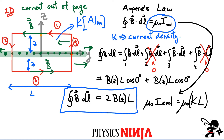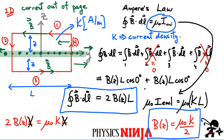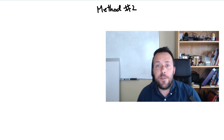Setting the two sides equal: 2BL = μ₀KL. The length L cancels from both sides — so the result doesn't depend on the loop size chosen. Isolating B, the magnitude of the magnetic field is B = μ₀K/2, a constant value that doesn't depend on the distance z from the sheet. We already know the direction from our earlier argument — it can be confirmed with the right-hand rule.